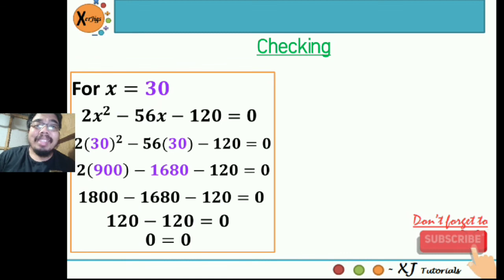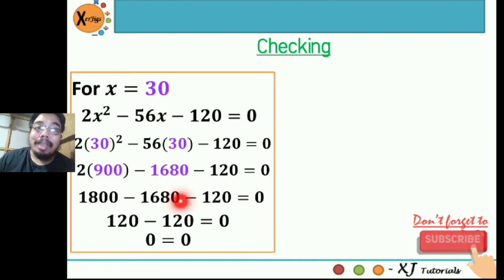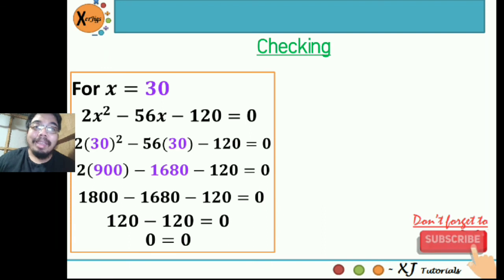Let's do the checking. For x equal to 30, substitute into the original equation: 2x squared minus 56x minus 120 equals 0. That gives 2 times 30 squared minus 56 times 30 minus 120 equals 0. The square of 30 is 900, multiplied by 2 is 1800. The product of negative 56 and 30 is negative 1680. So 1800 minus 1680 minus 120 equals 0, which gives 120 minus 120 equals 0. So 0 equals 0 — this is a solution.